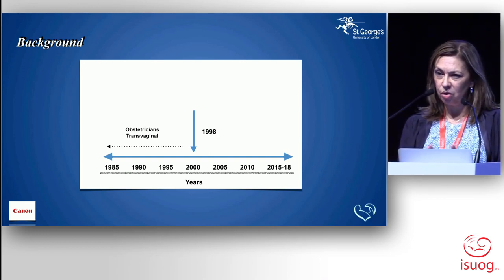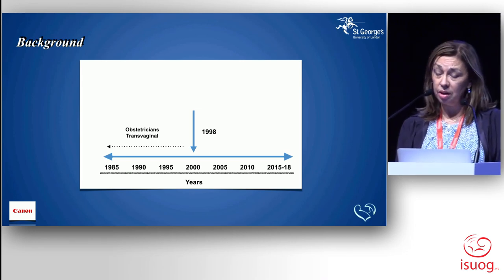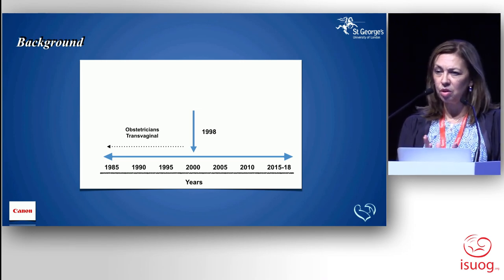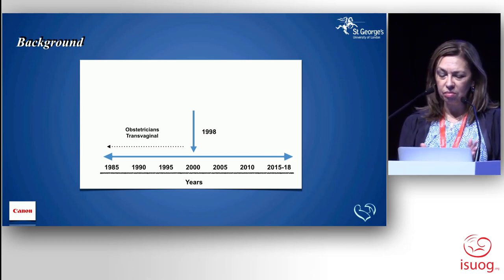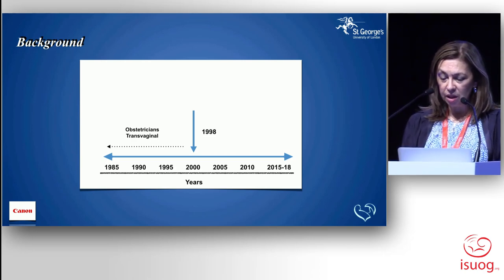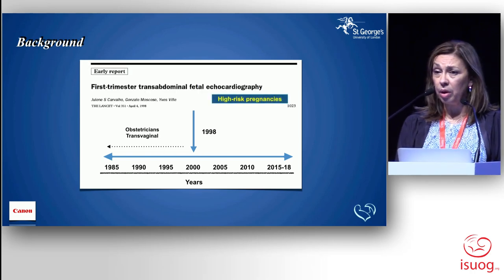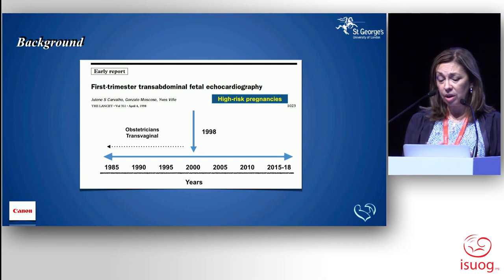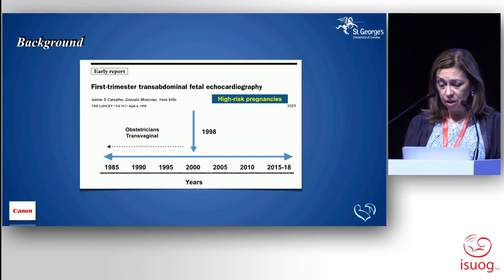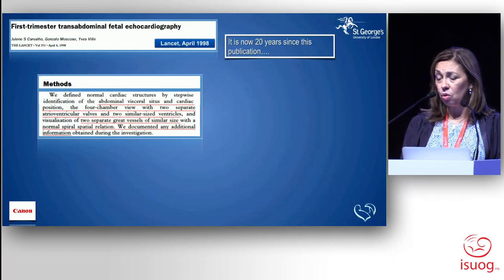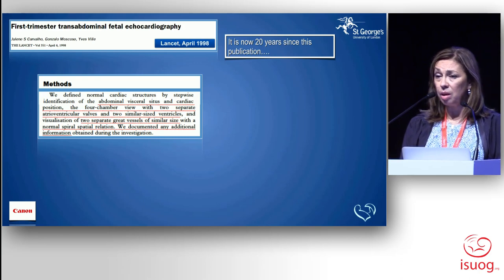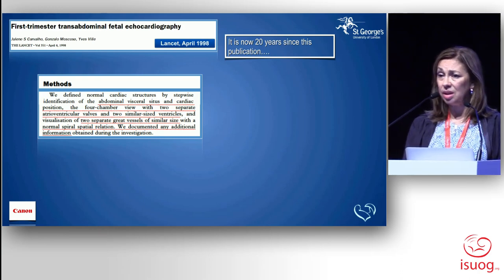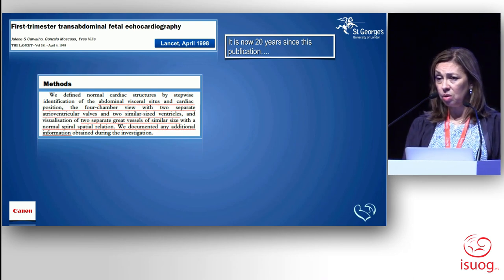Prior to 1998, early fetal echocardiography was done by obstetricians. Cardiologists were not interested in fetal cardiology at that stage, and all exams were done transvaginally — not a good thing for cardiologists. In 1998, my first publication about first trimester fetal echocardiography was published, but it was transabdominal. It was a small series of 15 patients seen over a relatively long period, done in high-risk pregnancies. That was over 20 years ago — April 1998 — and I can count on my two hands how many times I've used transvaginal during this time.